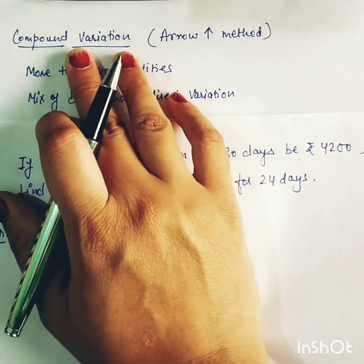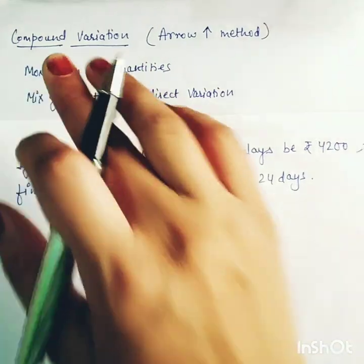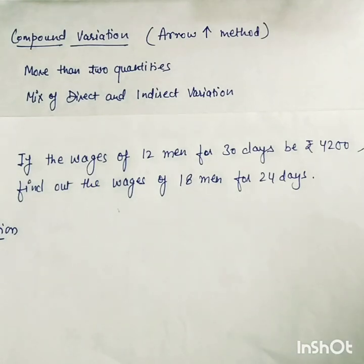So, what is compound variation? It can involve two quantities or more than two quantities. It is actually a mixture of direct and indirect variation.